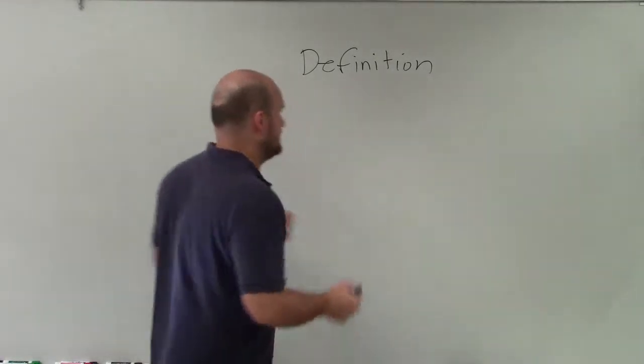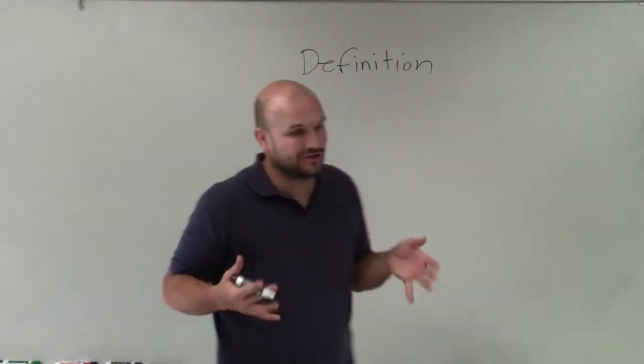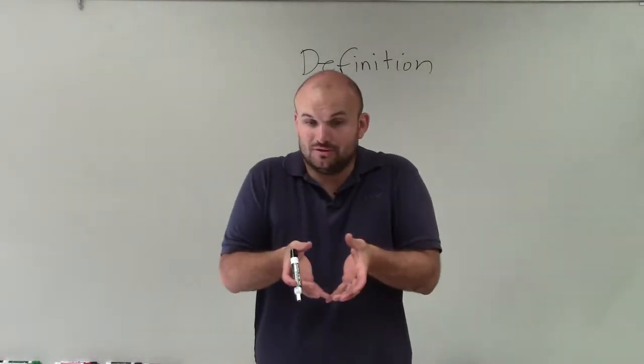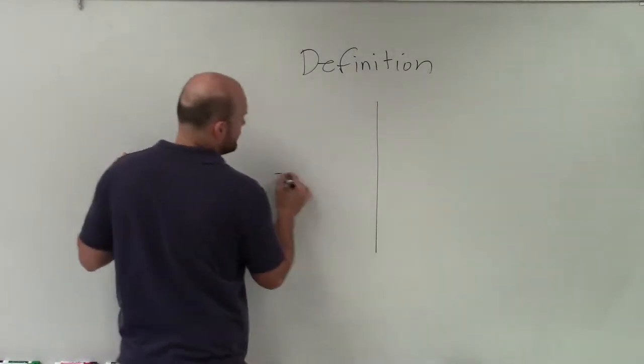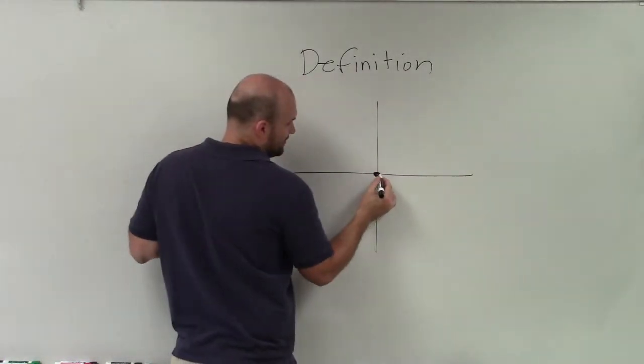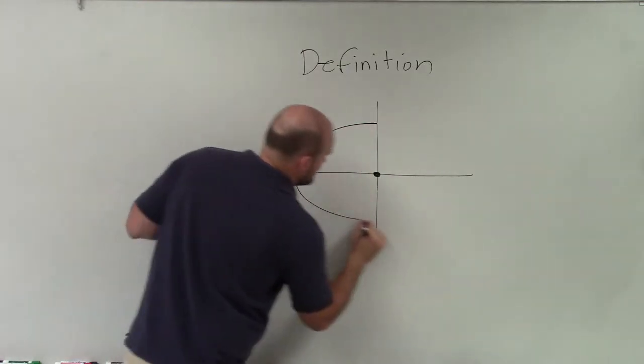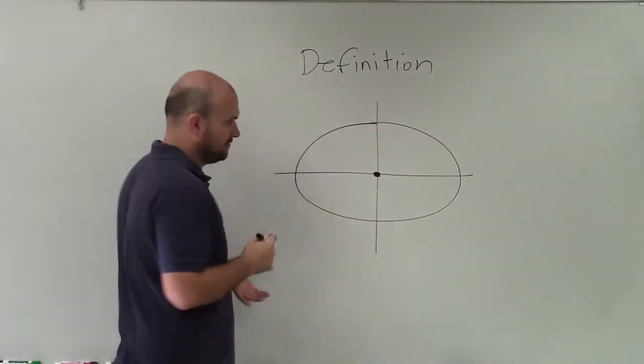When we're looking at an ellipse, a lot of times people think of like a circle and an oval, right? Well, basically when we're looking at an ellipse, which is kind of correct, so let's think about an oval.